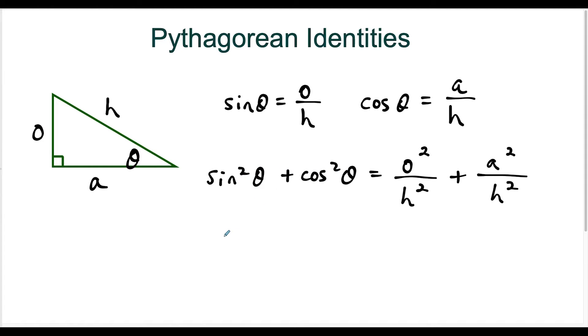But now when I want to add those two fractions together, I can combine them because they have the same denominator. So I have O squared plus A squared. And if you think about it in this right triangle, O squared plus A squared is equal to the hypotenuse squared. That's just the Pythagorean theorem. That's why they call these the Pythagorean identities because you could derive it using Pythagorean theorem. And then H squared divided by H squared is just equal to one.